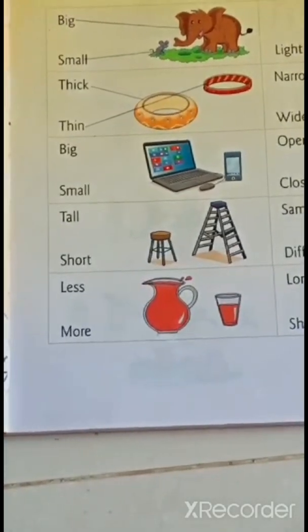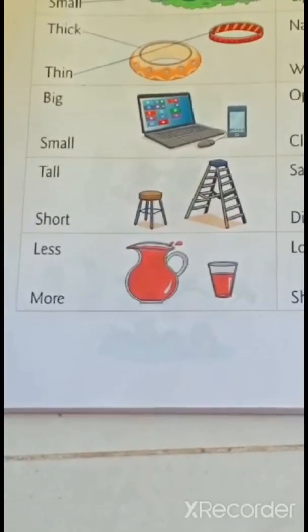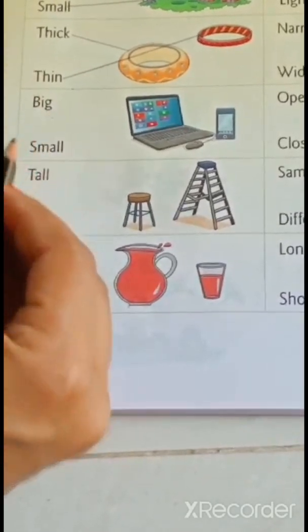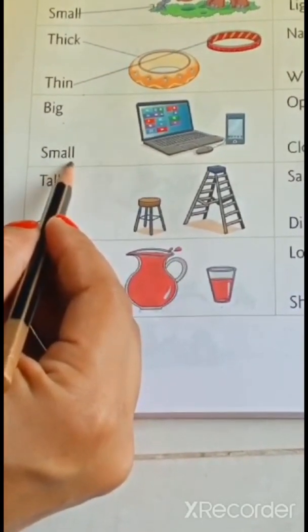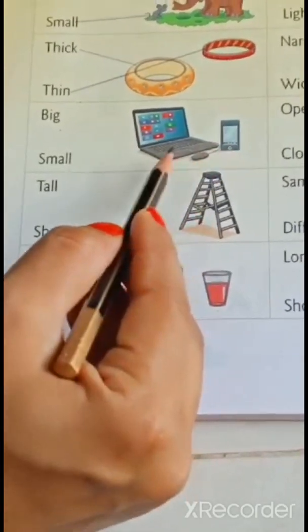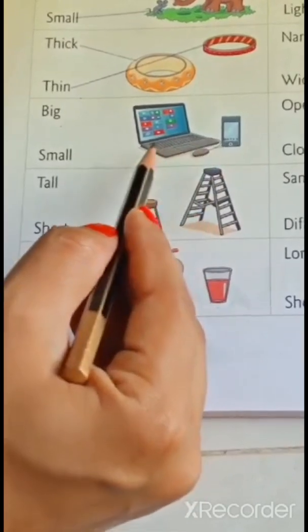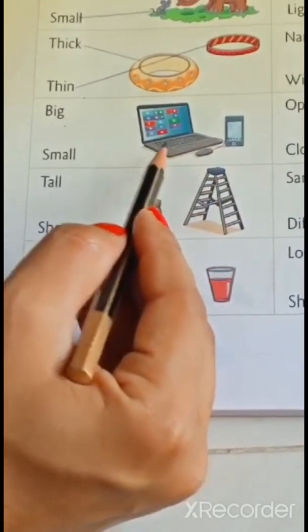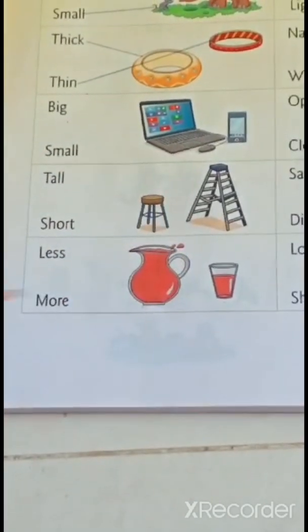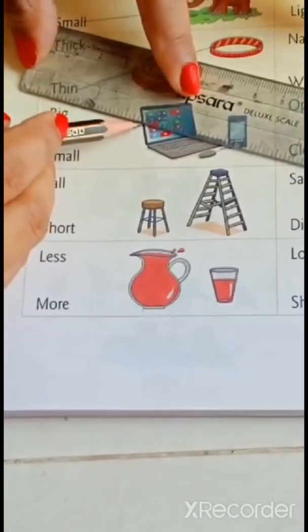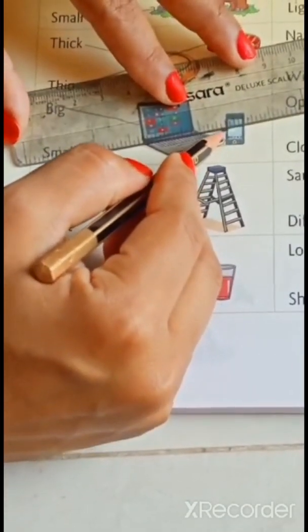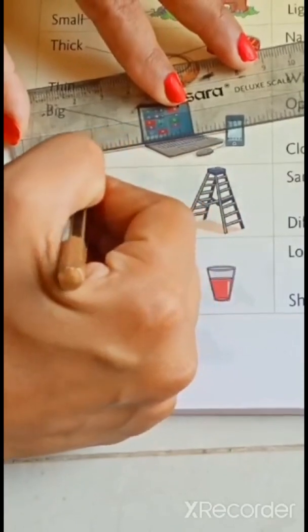Now, next. Okay. Now, next. B-I-G big and S-M-A-Double-L small. Here, laptop and mobile phone. So, which one is big? Laptop or mobile phone? Laptop. So, join B-I-G big with laptop. Laptop is big. And this mobile is small. So, this mobile with small.